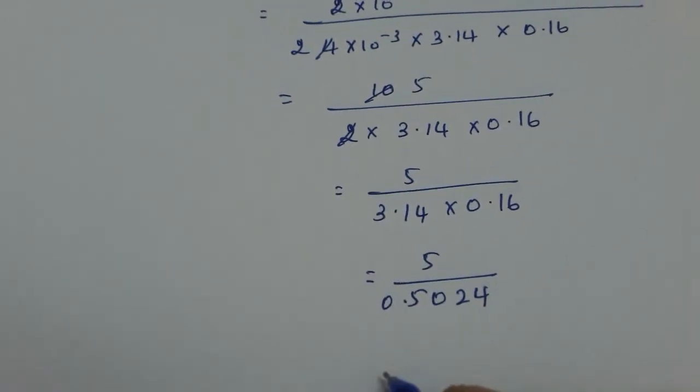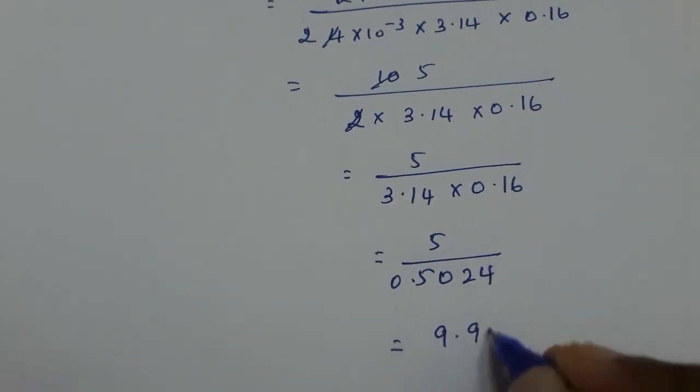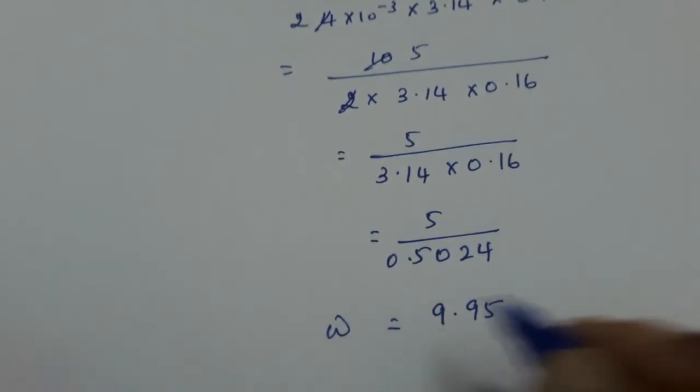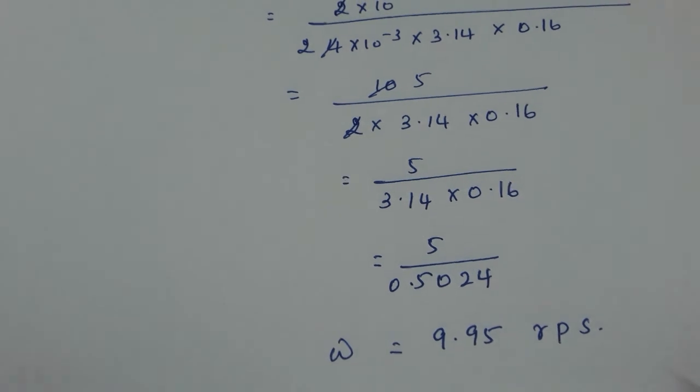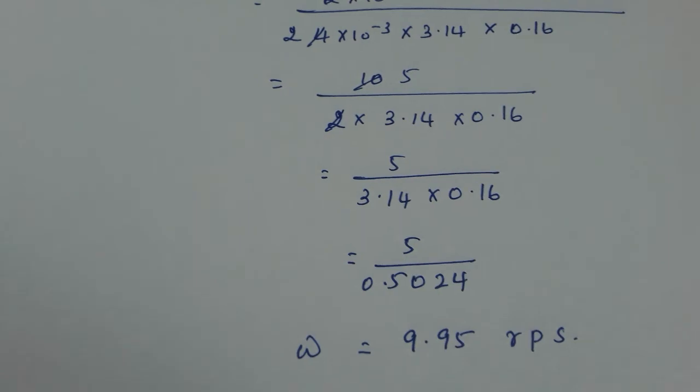If you multiply the denominator, you will get 0.5024. If you divide this, you will get 9.95. So omega is equal to 9.95 rotations per second, or 9.95 rps.